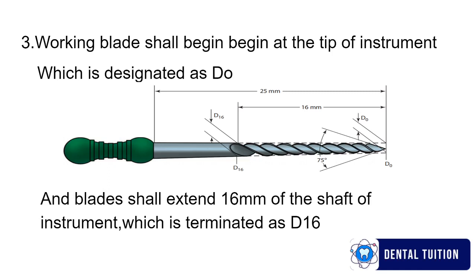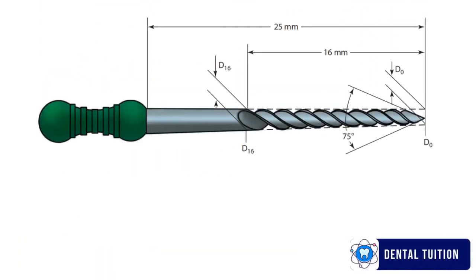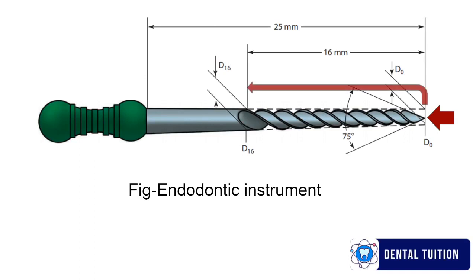Now proceeding towards next recommendation, the taper of the instrument shall be present, which should extend from the tip of the instrument which is D0 to D16. D16 is the diameter where the blade ends.